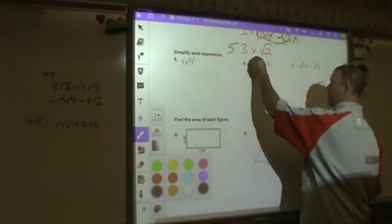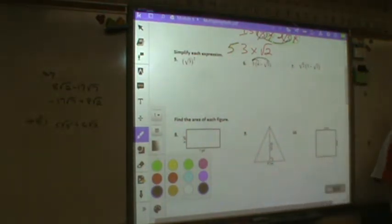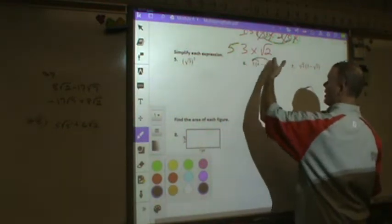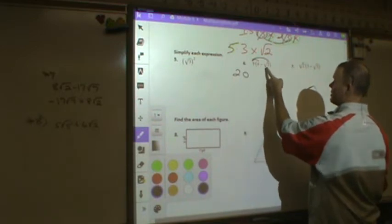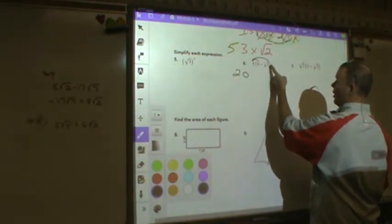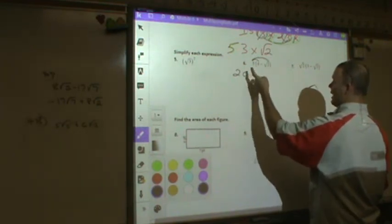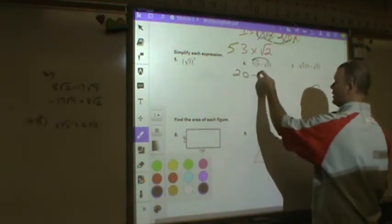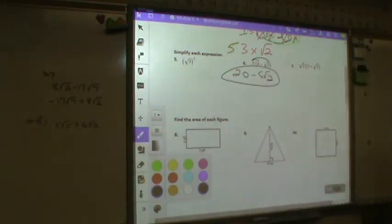So what that lets me know is it lets me know that I need to multiply the first term times both terms in parenthesis. Five times four, twenty, five times the coefficient of negative square root of two is one. Five times one is five. Well, five times negative one is negative five square root of two. Done. It's that simple.